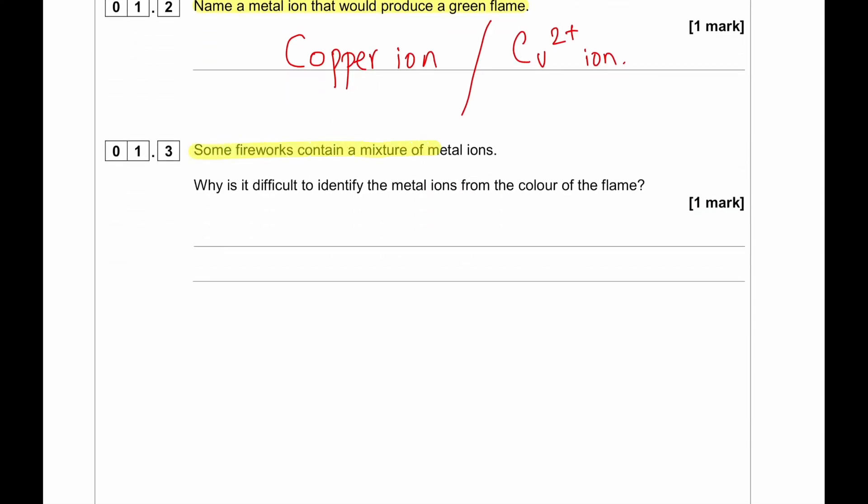Some fireworks contain a mixture of metal ions. Why is it difficult to identify metal ions from the color of the flame? It is usually difficult because in those fireworks there are multiple metal ions present and one color can mask the color of the other flame.